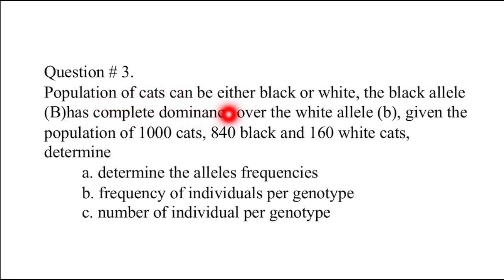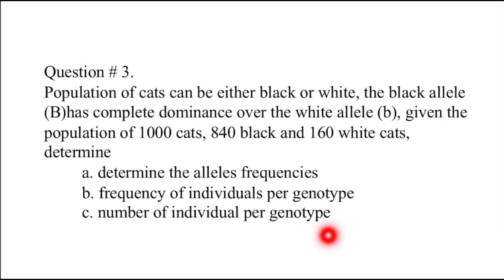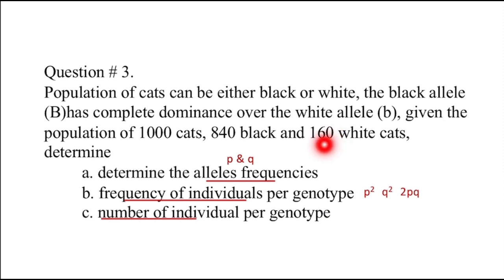Question 3: A population of cats can be either black or white. The black allele has complete dominance over the white allele. Given a population of 1000 cats — 840 black and 160 white — determine the allele frequencies, frequency of individuals per genotype, and number of individuals per genotype. The number of white cats (160) represents the recessive genotype Q². Dividing 160 by 1000 gives Q² = 0.16. Taking the square root, Q = 0.4.